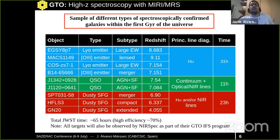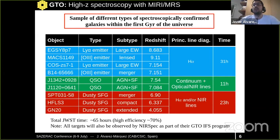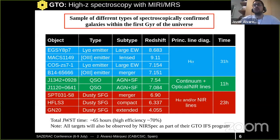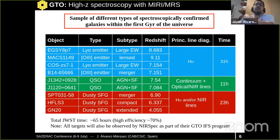Here I present the high-redshift spectroscopy GTO program of MIRI. We have selected nine galaxies — a sample of different types of spectroscopically confirmed galaxies within the first gigayear of the universe. We have three different blocks. The first block is star-forming galaxies: four galaxies between redshift 7 and 9, targeting H-alpha. Then we have two quasars at redshift higher than 7, covering the full MIRI spectral range to detect the continuum and optical and near-infrared emission lines. Then we have starburst-forming galaxies: three of them from redshift 4 to 6.9, targeting H-alpha and/or near-infrared emission lines.